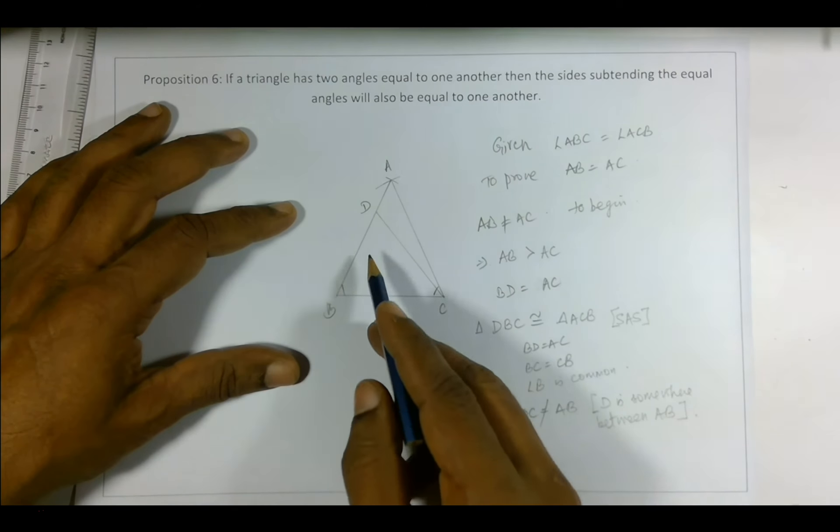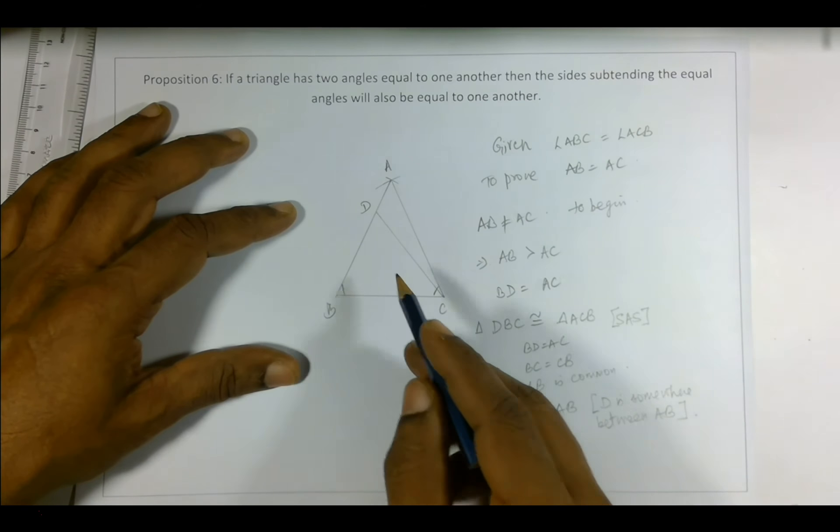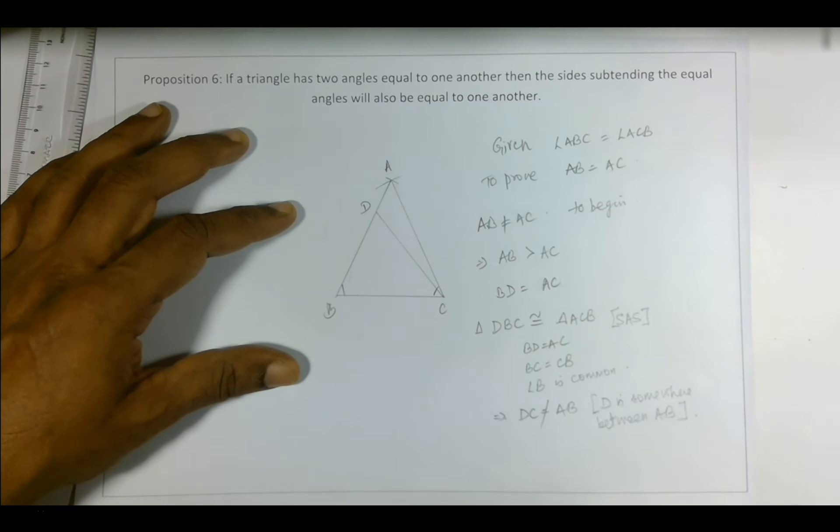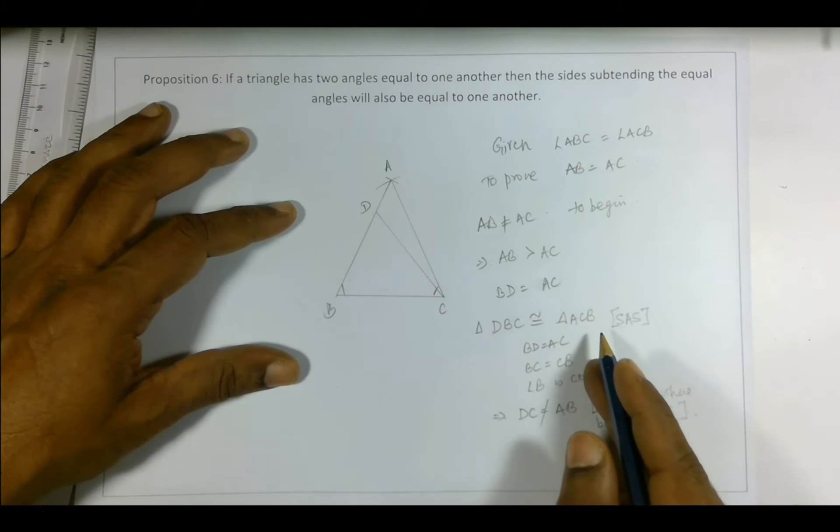Yes, so which means the triangle DBC is smaller than ACB - it should be. But here we have arrived at that these two triangles are congruent, so the sides are equal, all the sides are equal, which means DC equal to AB.